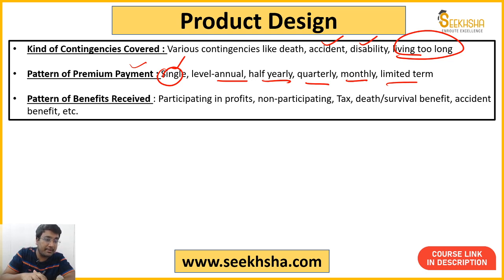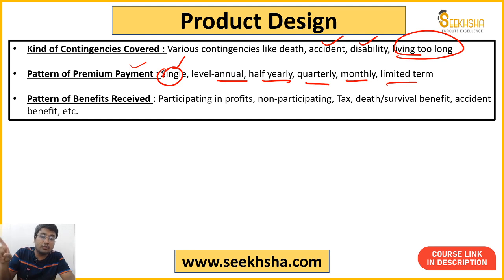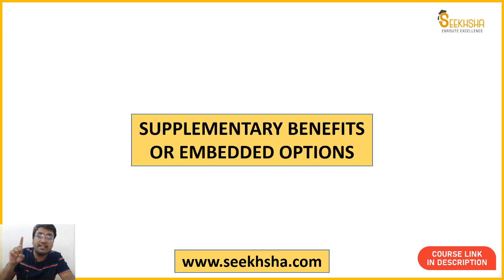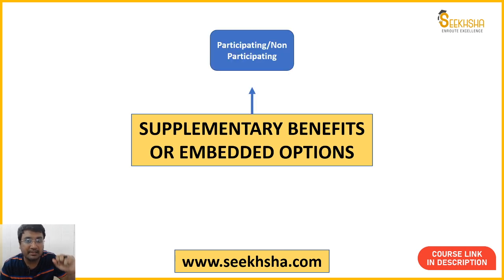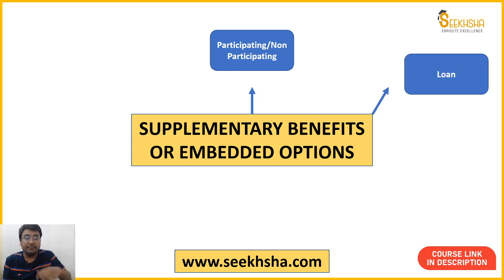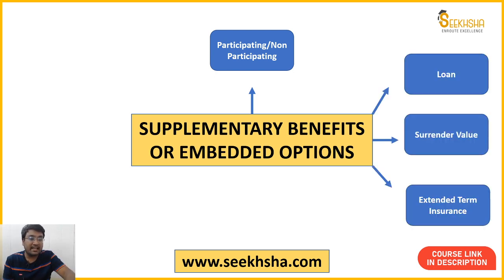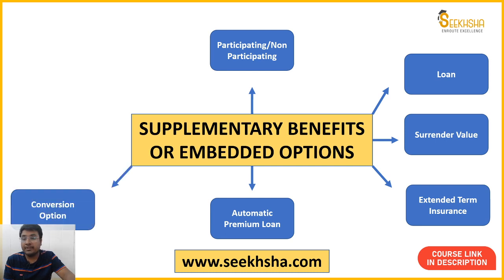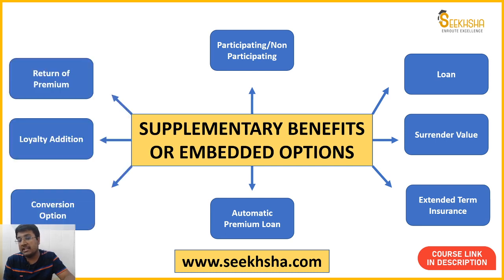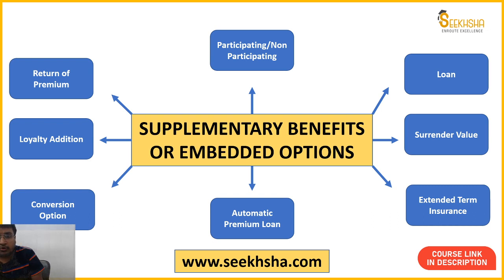Some policies are participating, some are non-participating. Some give you tax benefits, some give you death or survival benefits, accident benefits — so there are different patterns. Basically this pattern of benefits is what we have to cover. Supplementary benefits or embedded options that come with a particular policy — we need to understand: participating/non-participating, loan, surrender value, extended term insurance, automatic premium loan, conversion option, loyalty addition, and return of premium.